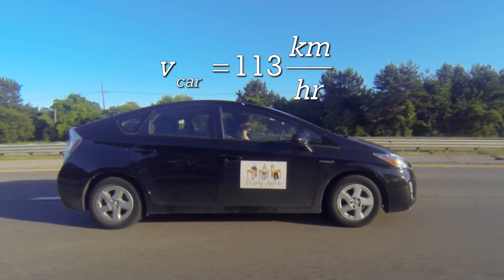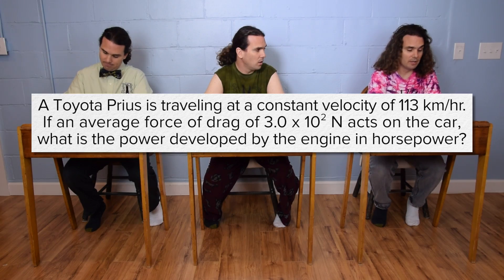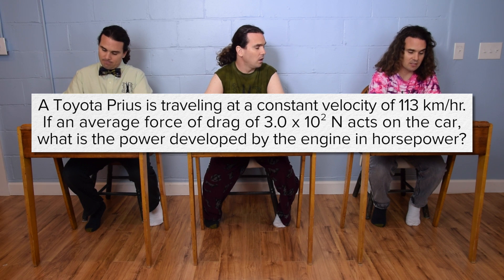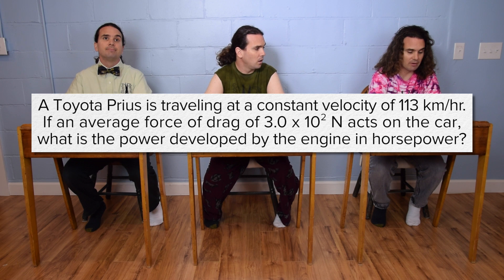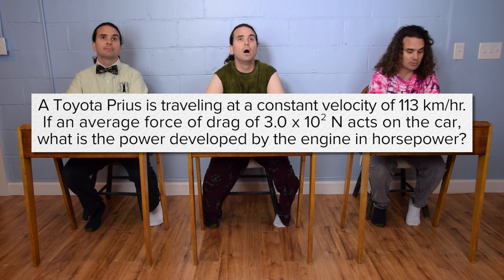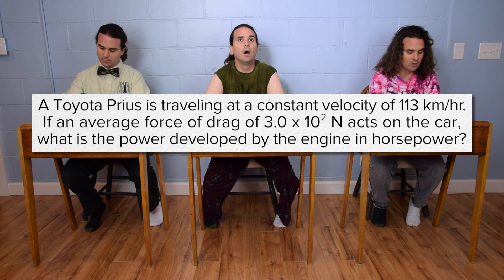Bo, could you please read the problem? And Bobby, could you please translate? A Toyota Prius is traveling at a constant velocity of 113 kilometers per hour. If an average force of drag of 3.0 times 10 to the second Newtons acts on the car, what is the power developed by the engine in horsepower?